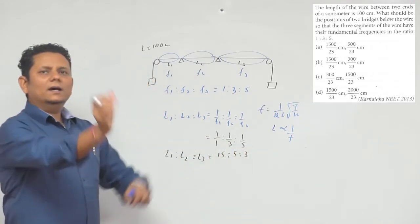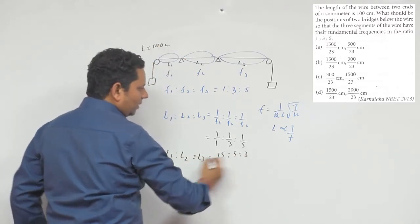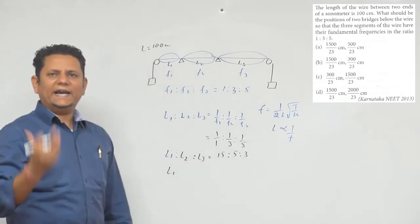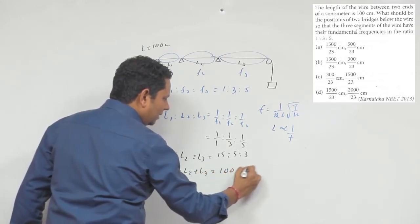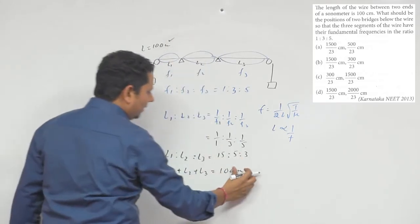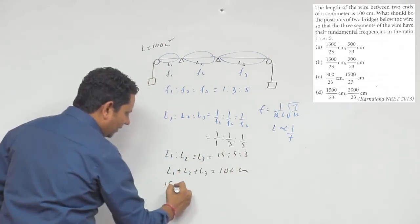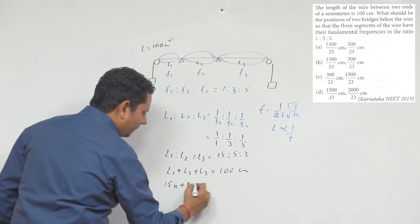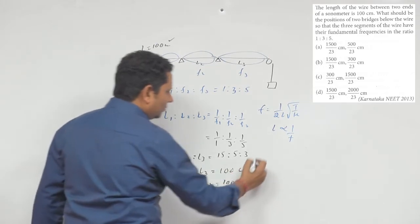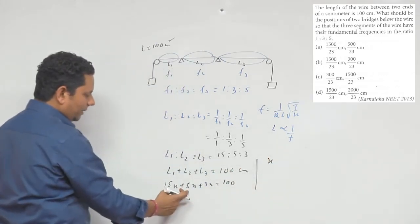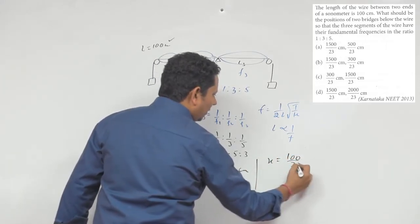Similarly, you can see L1 plus L2 plus L3 with common factor x is equal to 100 cm. This is the given condition, 100 cm. So, we can say 15x plus 5x plus 3x is equal to 100. The common factor x will be equal to, left hand side 15 plus 5 is 20 plus 3 is 23, so x is equal to 100 divided by 23.